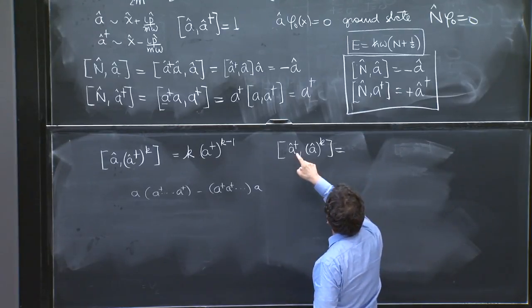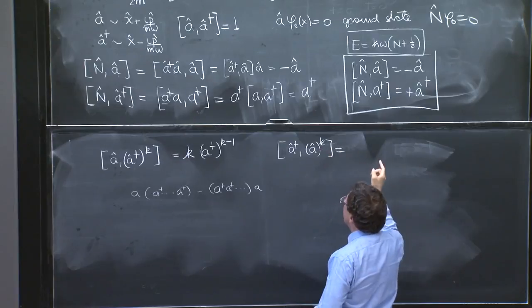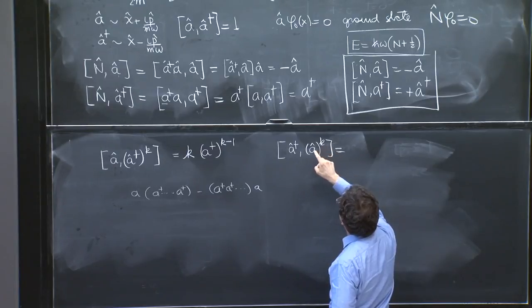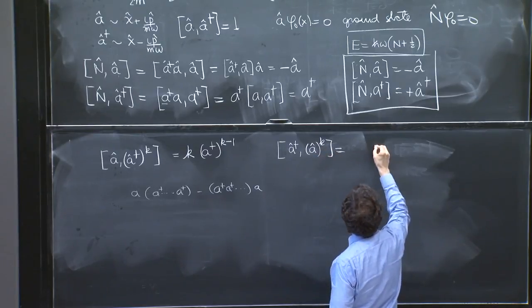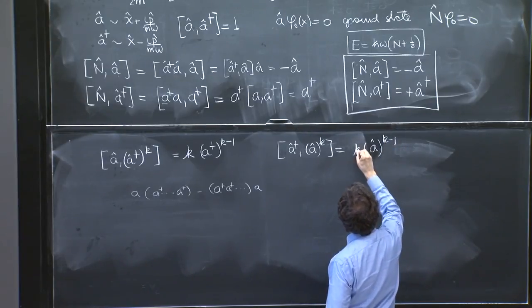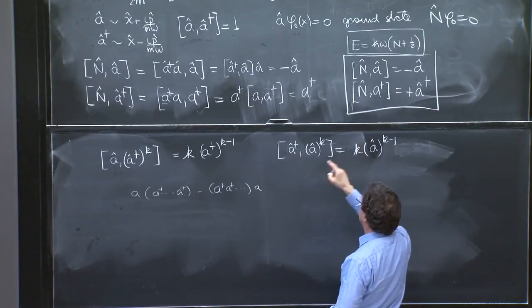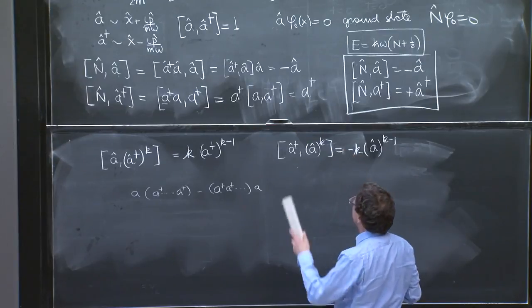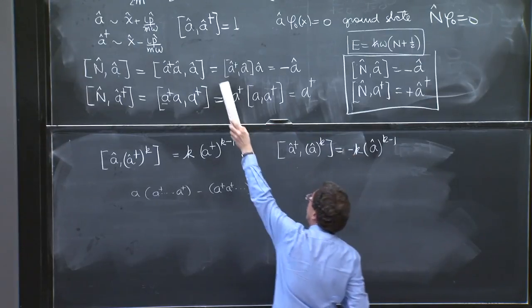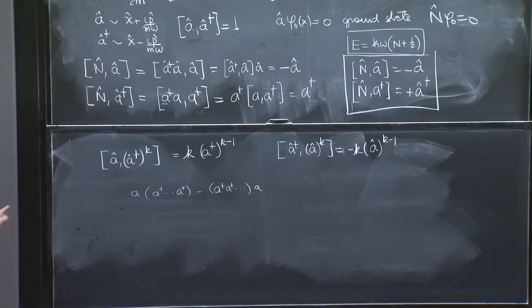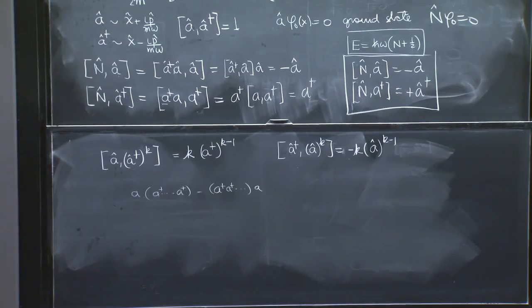a dagger with a to the k, this would give you, if you had just one of them, you would get a minus sign, because a dagger with a is that. But the same thing holds. You're going to get one less a hat, so a hat to the k minus 1. A factor of k, because k times you're going to move an a dagger across an a. And a minus, because you're getting a dagger commutator with a, as opposed to a commutator with a dagger, which is 1. So these are two very nice and useful equations that you should be comfortable with.